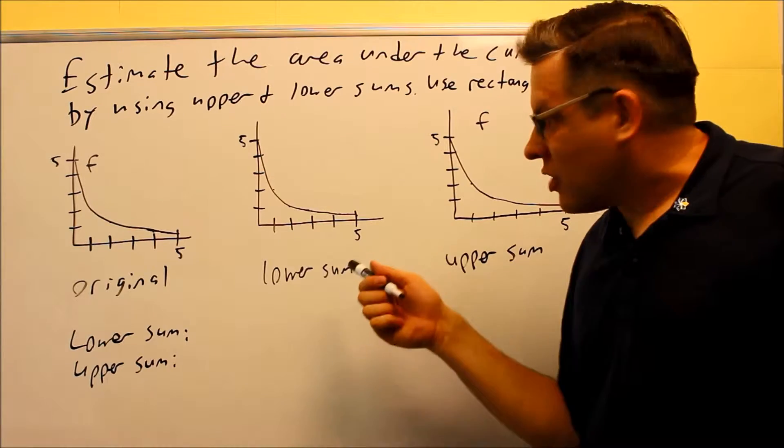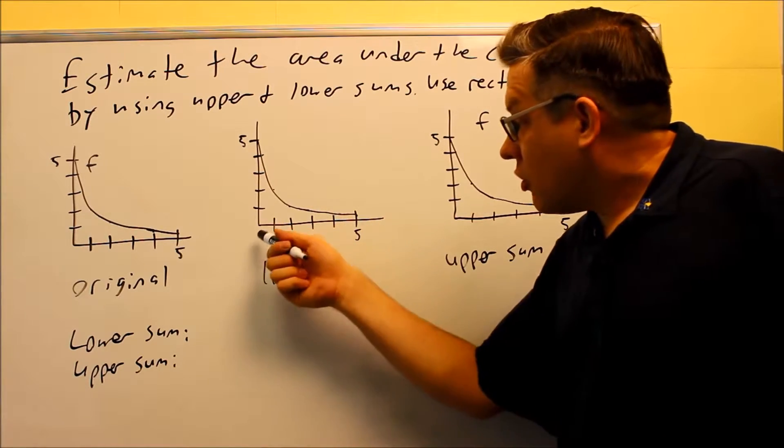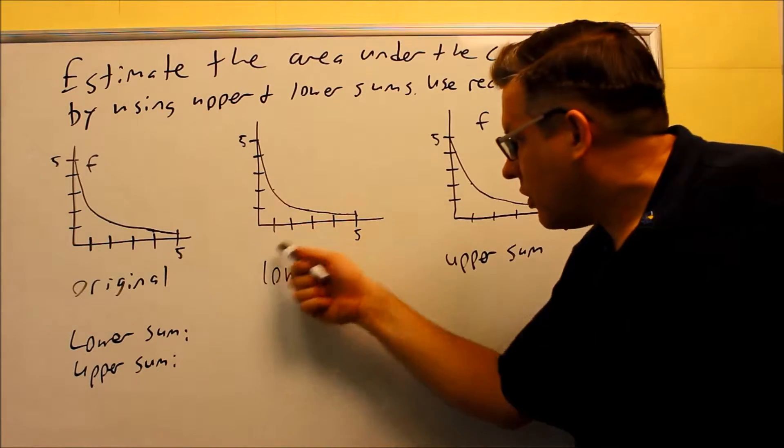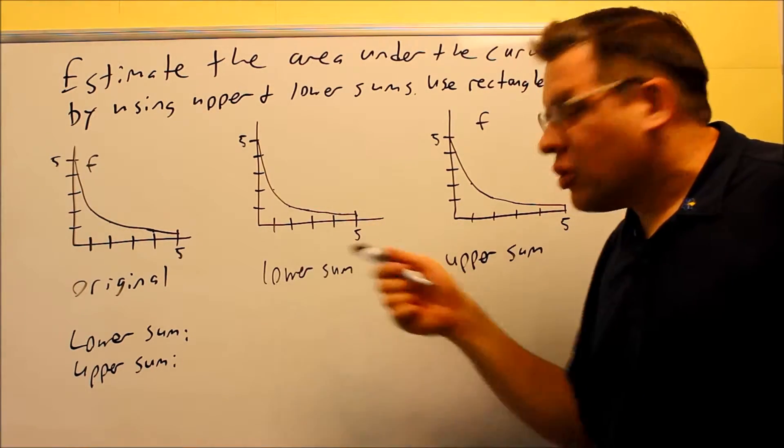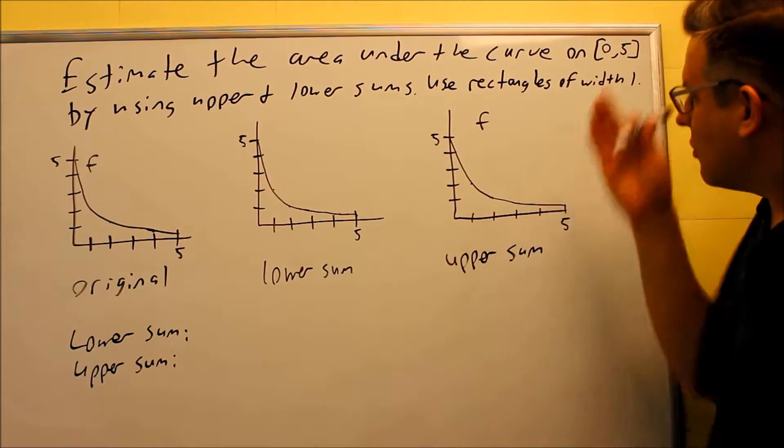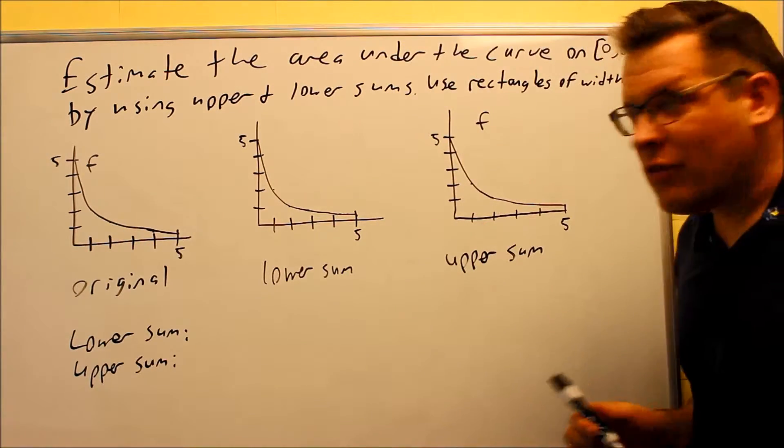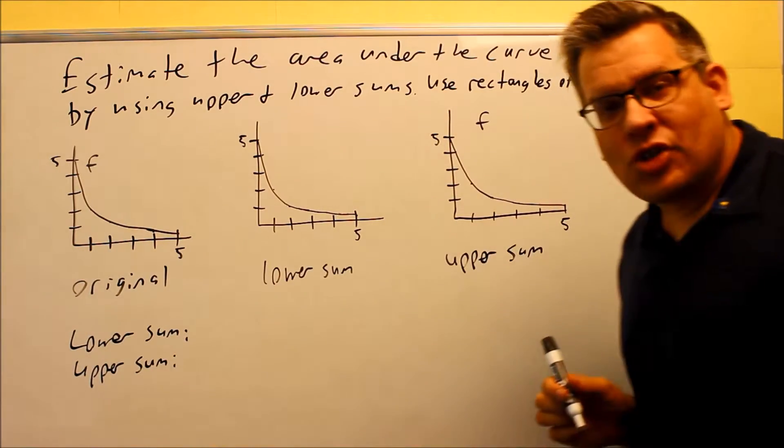For instance, let's say you're going between 0 and 5 and they want you to find three rectangles. Well then you would split this up into three different regions, and you're working with fractions. But in this case, it tells us to use rectangles of width 1, so we know we're going to use five of them because we're going between 0 and 5.